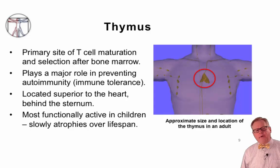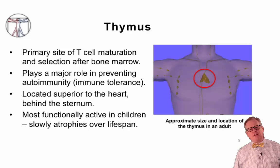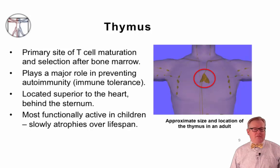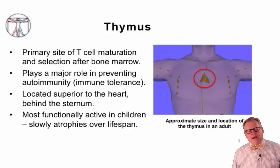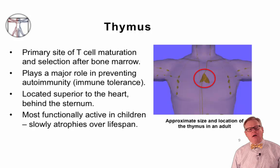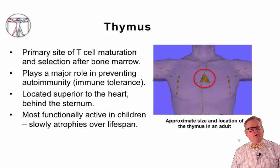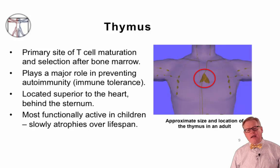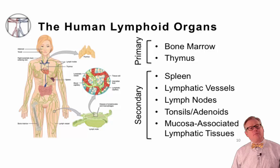The second primary lymphoid organ is the thymus, which is located behind the sternum and superior to the heart. It is the primary site of T cell maturation — think of it as the T cell university, where T cells go to be educated. The thymus plays a major role in preventing autoimmunity because it is where the initial events of immune tolerance begin to be initiated. The thymus is most active in young children where the organ is quite large, but over time it becomes increasingly infiltrated by fat, begins to atrophy, and is less active in older age.